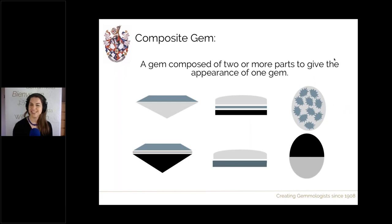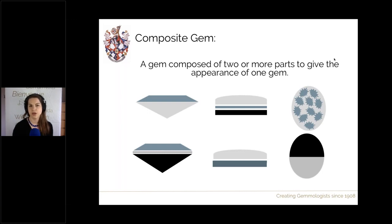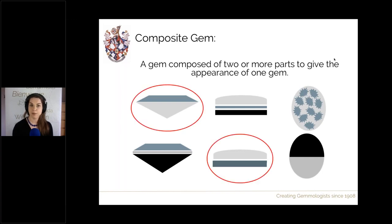So, what is a composite gem? It is a gem that's been artificially constructed to look like one gemstone, made up of two or more component parts. Some of them are called doublets — when they're made out of two parts, with one part on top of the other — for a number of reasons using a number of different materials.